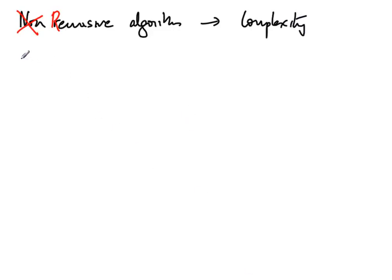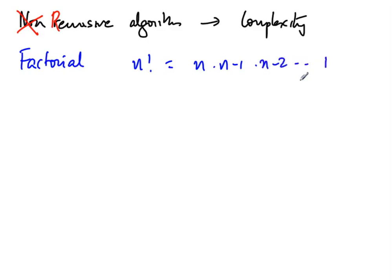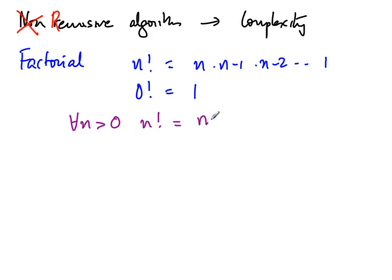The first algorithm we are going to look at is very simple: the factorial function. We know that n factorial is n times n minus 1 times n minus 2, down to 1, and in particular 0 factorial is defined to be 1. We can write this recursively: for all n bigger than 0, n factorial is given by n times n minus 1 factorial.